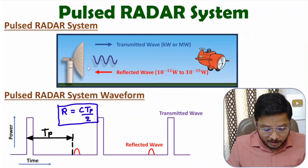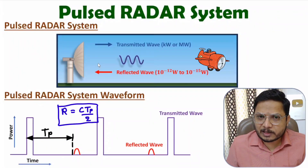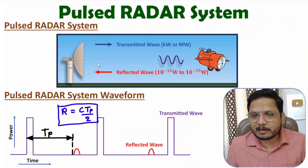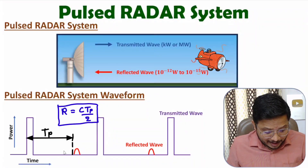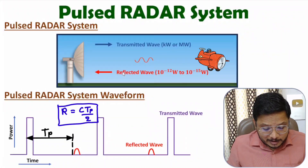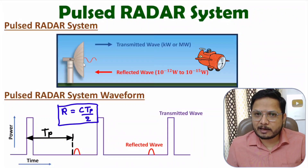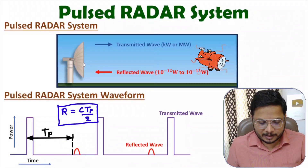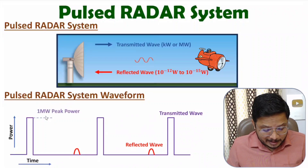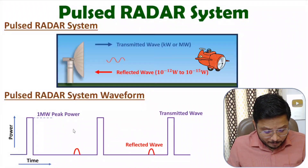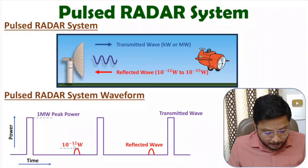The velocity of this EM wave is the velocity of light. Velocity equals distance divided by time. We calculate the time by comparing the two signals, and distance is r + r = 2r. Based on that we can easily identify the range of the target. The strength of the transmitted wave is around one megawatt of peak power, while the strength of the reflected echo signal is in terms of 10 to the power of minus 12 watts.